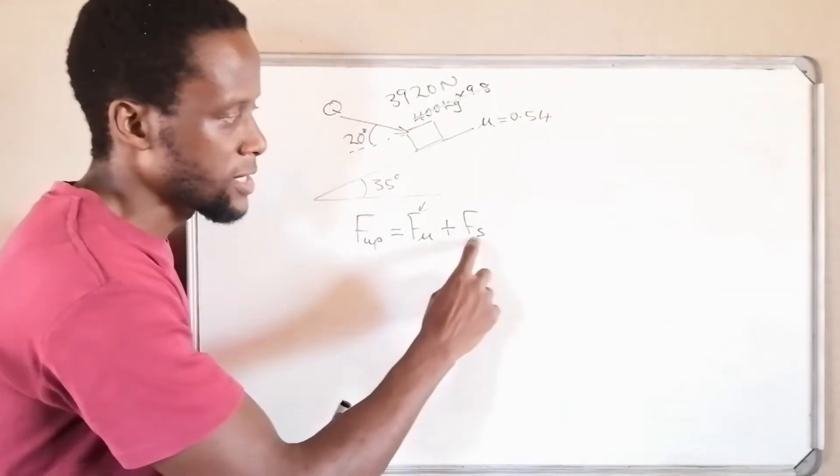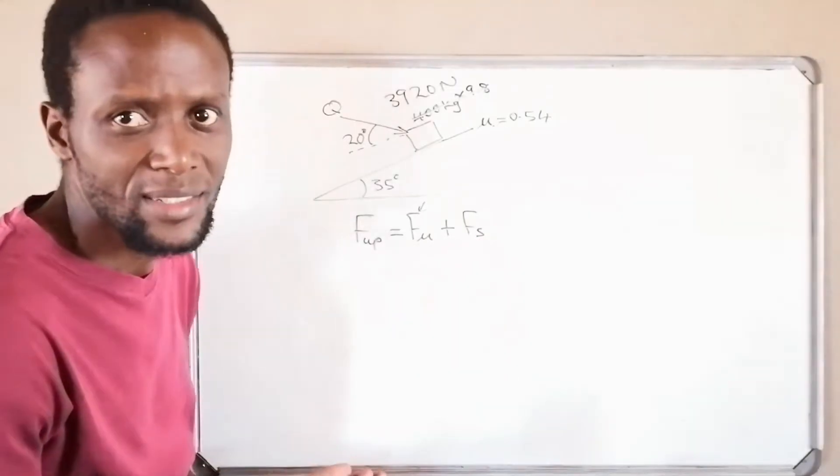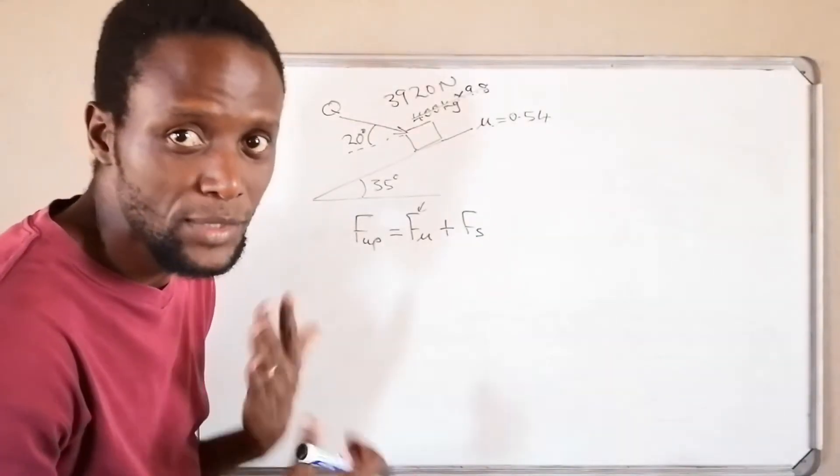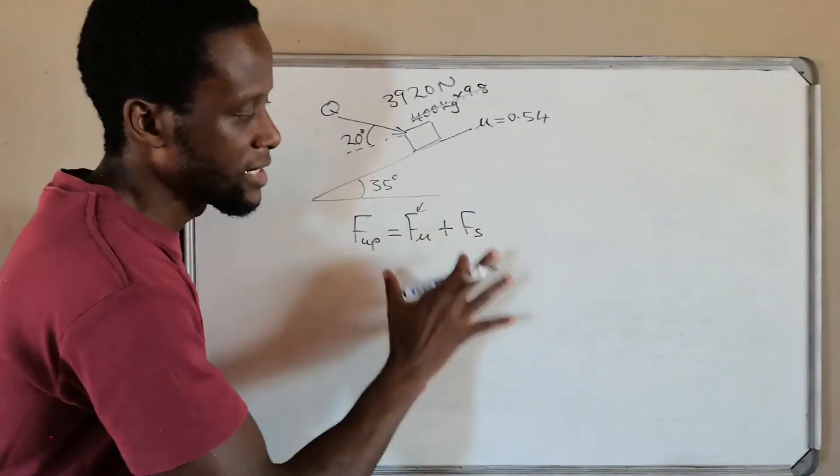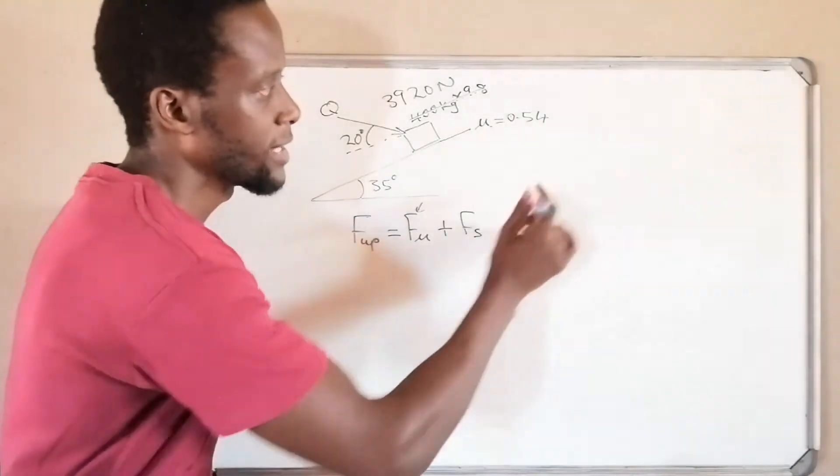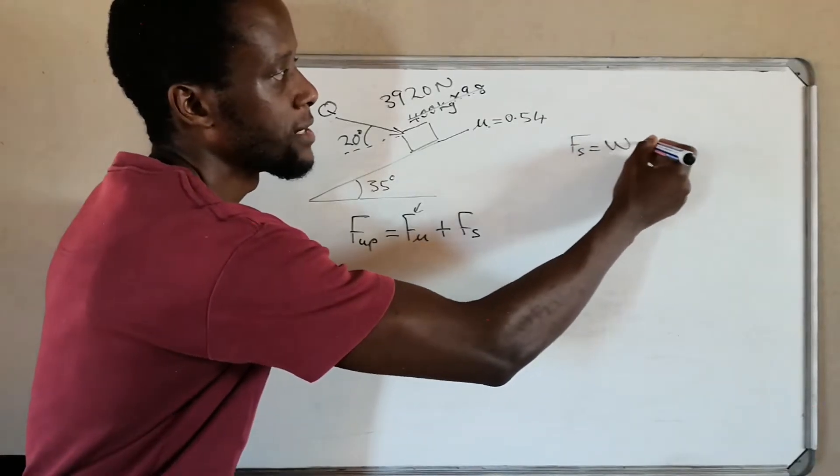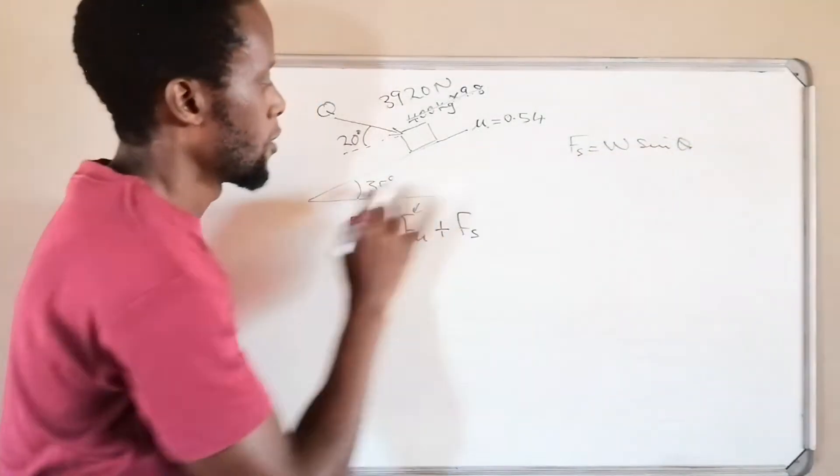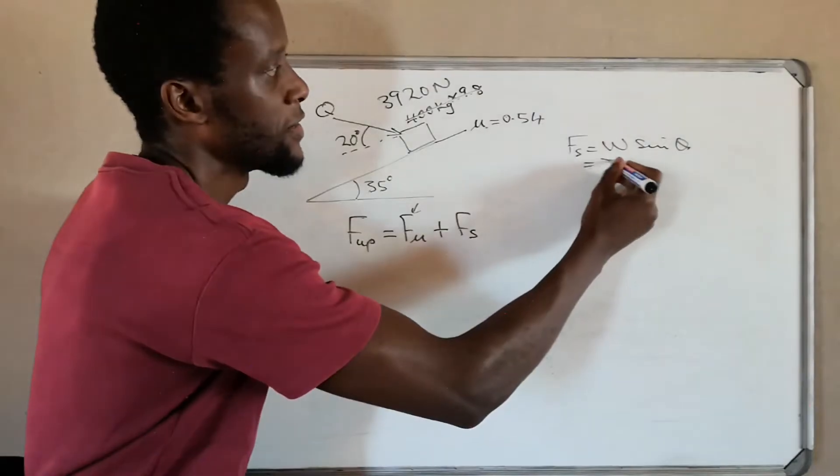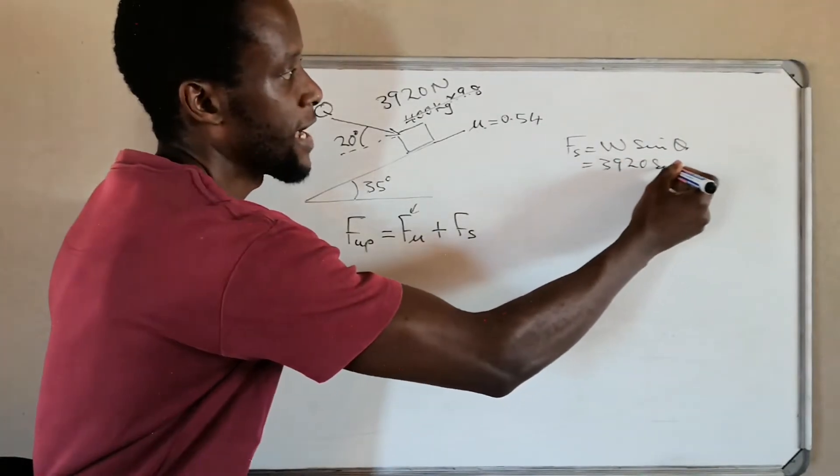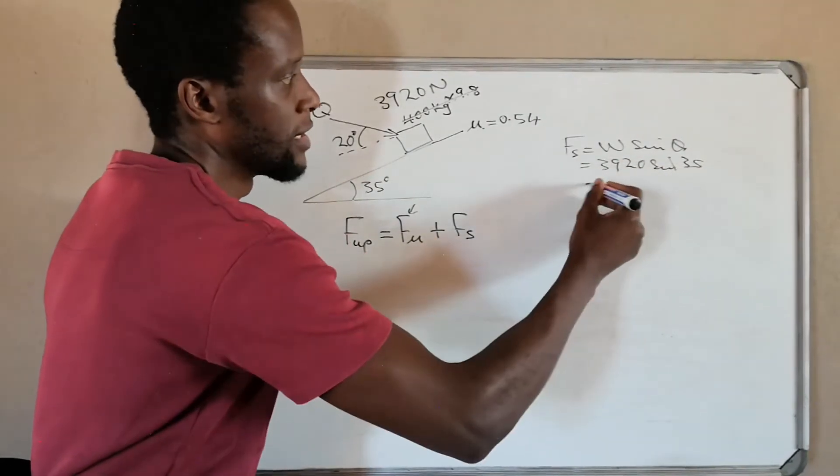So always deal with the weight. And then with the sliding force there's not much work to be done, so I'll start with this one. Always start with the easiest. It's better that we start with the easiest. Go to the surface, so I'll break down this before I just jump into this formula. I'll break down this. My sliding force is equals to the weight sine theta of the incline. So I'll just say 3920 sine 35, it will give me